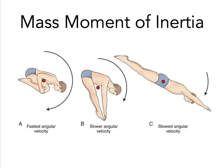Athletes often attempt to control the mass moment of inertia by altering the position of their individual body segments relative to the axis of rotation. The diver in this image reduces the mass moment of inertia by assuming a tuck position, bringing his limbs towards the center of mass closer to the axis of rotation. Based on the principle of conservation of angular momentum, reducing the body's mass moment of inertia results in increased angular velocity — he's able to spin faster. In image C, the athlete slows angular velocity by assuming a pike position, extending extremities away from the axis of rotation.